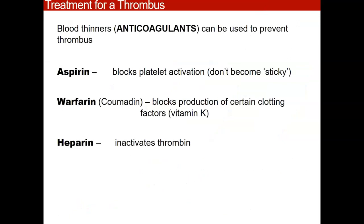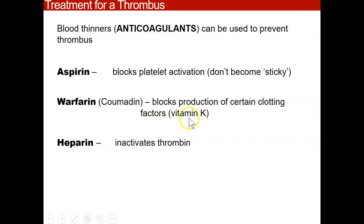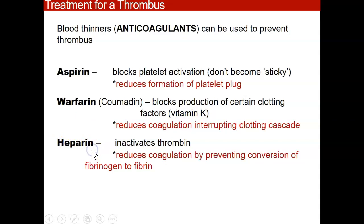There are treatments for a thrombus. People can go on blood-thinning medication called anticoagulants and stay on it for life if they have a tendency for clots. Three major ones to know: Aspirin blocks platelet activation, so platelets can't become sticky and can't stick together to initiate a clot. Warfarin, also known as Coumadin, blocks production of clotting factors — specifically vitamin K — so you're not able to clot your blood. Heparin reduces coagulation by preventing the conversion of fibrinogen to fibrin, stopping the clotting cascade.